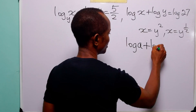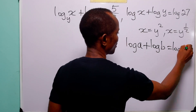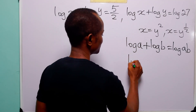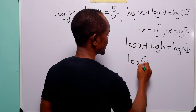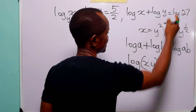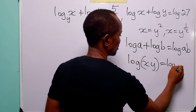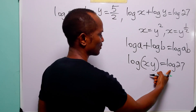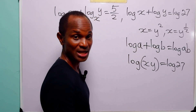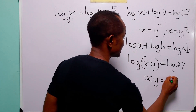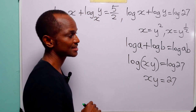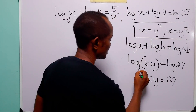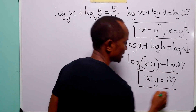Coming to the second equation, remember that log a plus log b equals log(ab). So the left-hand side is equal to log(xy), which is still equal to log 27. This means xy equals 27.